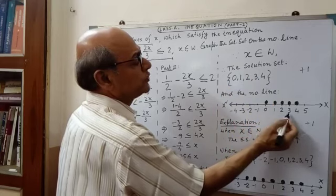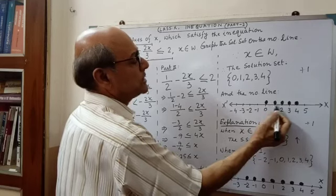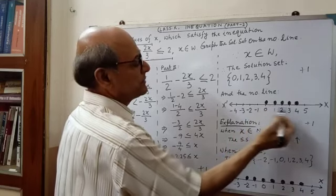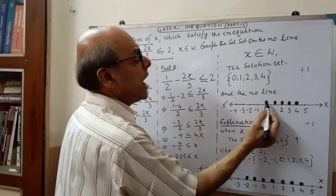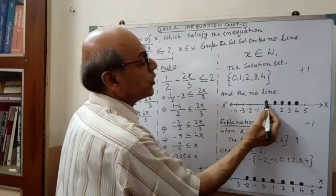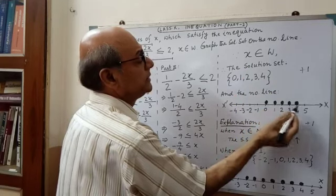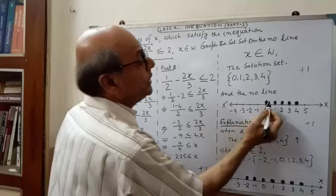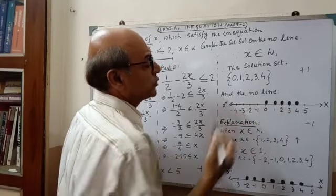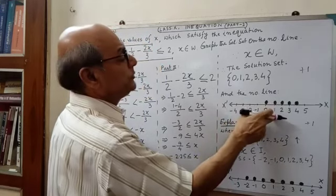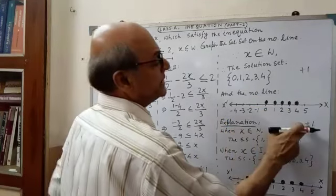Mark 0, 1, 2, 3, 4, 5 on the number line. The gap between two values must be uniform. The right side is plus, left side is minus. In case of whole number, you have to draw the number line with dark circles — no shading between two values, only dark circles. If you do correctly, then you will get another part marks, plus 1.